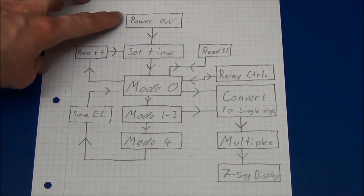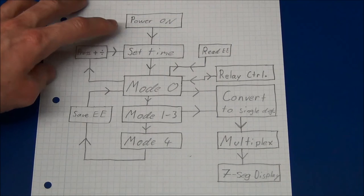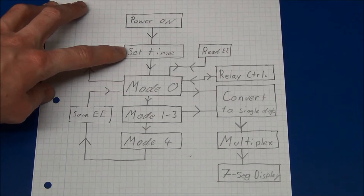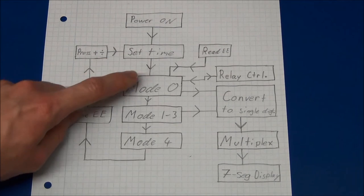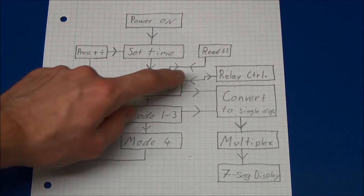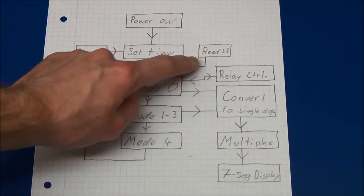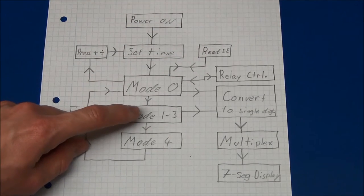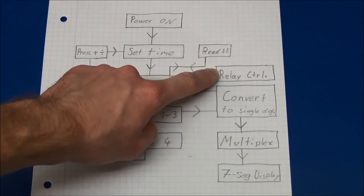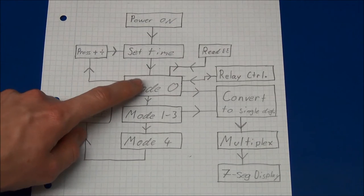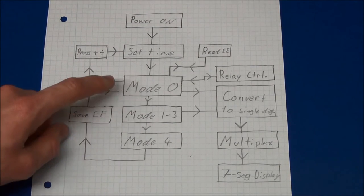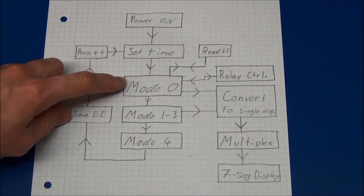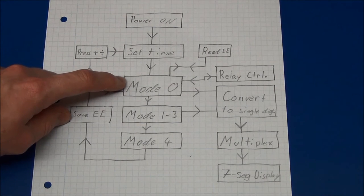So when the device is turned on it will ask us for the current time and we will input that. And when we have done that it will enter mode 0, but it will read the EEPROM to get the saved values for when to turn on or off the relay, and these values we can set if we change the mode.